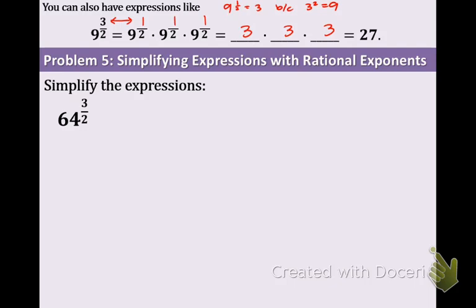Let's take a look at example 5. This deals with 64 to the 3 halves. We're going to rewrite that as 64 to the 1 half times itself and times itself again. Remember, the number of 64's is related to the numerator of the fractional exponent.